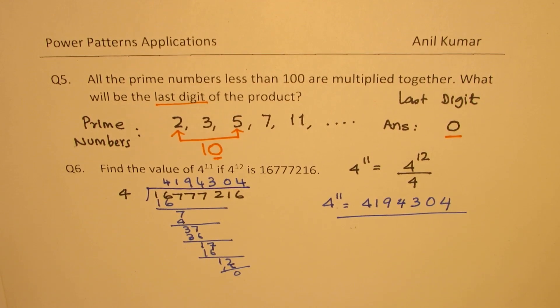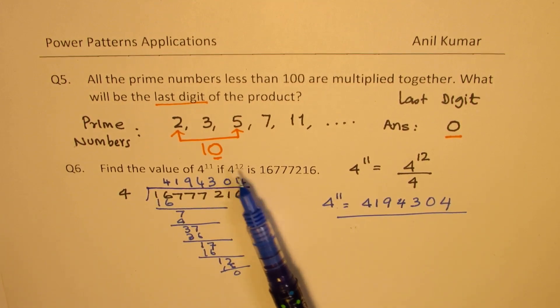Is that clear to you? You can always check your answer. If you multiply this by 4, you should get 4 to the power of 12.